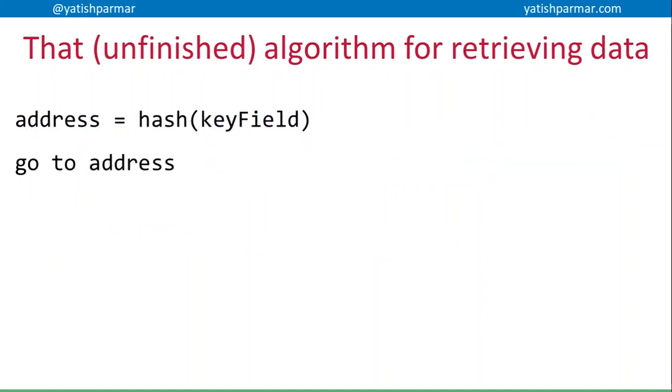Same again, that unfinished algorithm for retrieving data. The overly simplistic version from the previous video basically was that we run a hash on the key field to give us the address, go to that address, and we should be able to retrieve that data. But as we've seen, when we had a hash of five, we went to the same address as we would for the hash of zero, and therefore we end up with a collision.